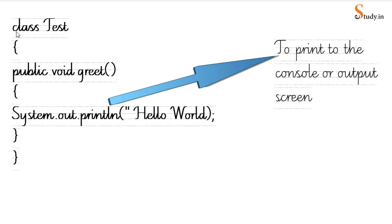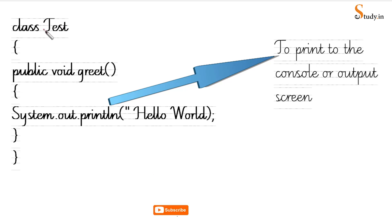Whenever we start our program we'll write the keyword 'class' — we will understand what a keyword is later. After 'class' you write the name of the class. This name can be anything you want; you can even give it your own name. I've chosen to call it 'test'.